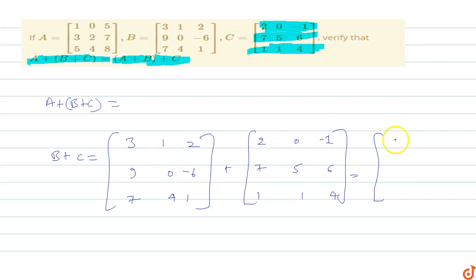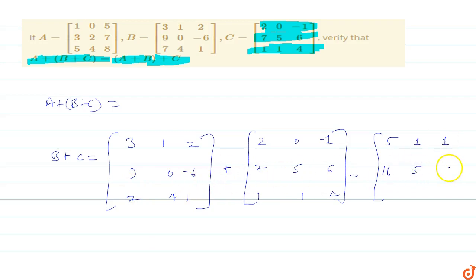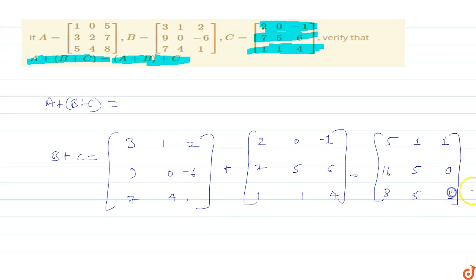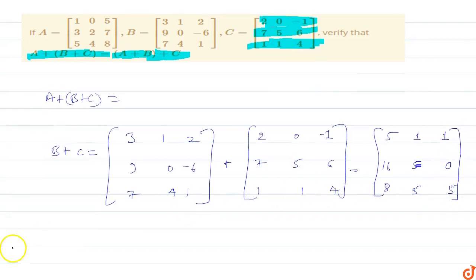So B + C equals: 3+2=5, 1+0=1, 2-1=1, 9+7=16, 0+5=5, -6+6=0, 7+1=8, 4+1=5, 1+4=5. So the B + C matrix is 5 1 1 / 16 5 0 / 8 5 5.